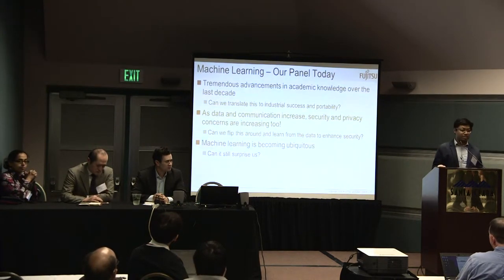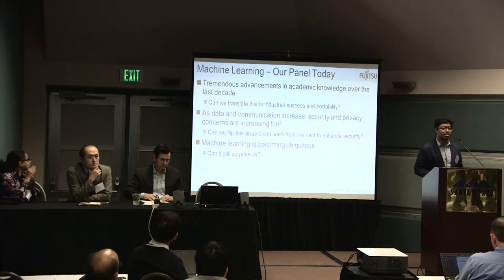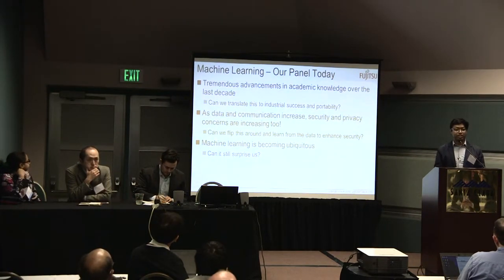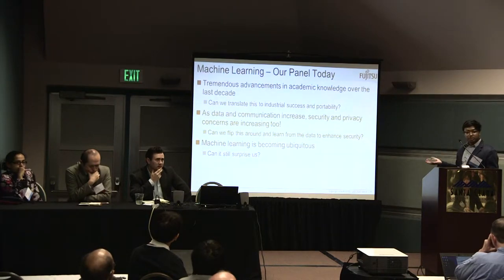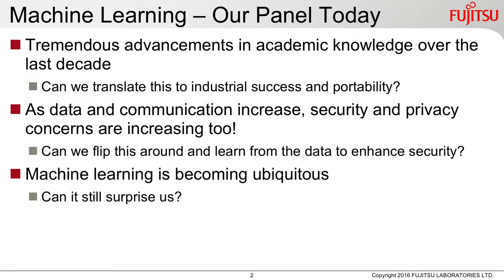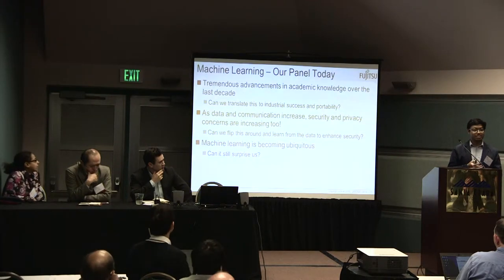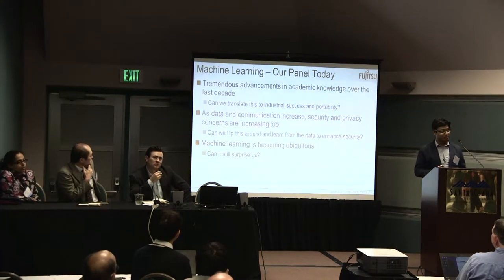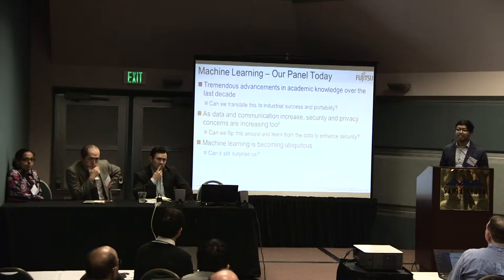What will we learn from our panel today? Broadly three topics. First, there have been tremendous advancements in machine learning over the past decade — can we translate this success to industrial settings, making things modular and seamless to integrate? Second, as data and communication increases, security and privacy are becoming ever more concerning — can machine learning help us increase our security and privacy? Third, machine learning is becoming ubiquitous — but can it still surprise us with use cases we haven't thought about?